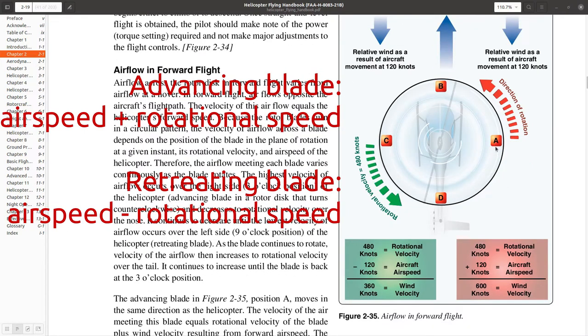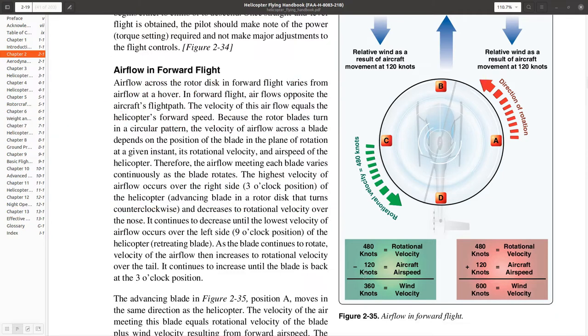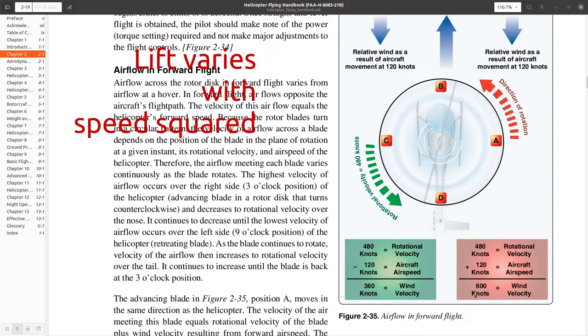So here at point A, I'm going to have 120 knots of airspeed plus, let's say, 480 knots of rotational velocity, which really means I have 600 knots of wind here on the advancing blade. Now, if I look at point C with the retreating blade, now I have 480 knots of velocity, but the airspeed is flowing backwards. As I go forward in the helicopter, I have to subtract 120 knots. And now I essentially have 360 knots of wind. And remember, we said that lift was proportional to the speed squared. So this is a problem for me. I have a lot less lift on this side than on side A, the advancing blade side.